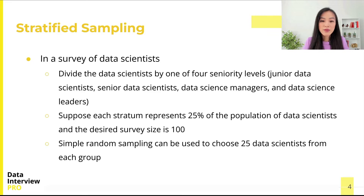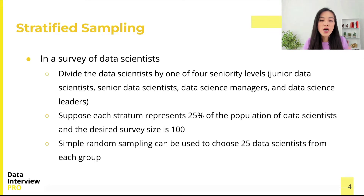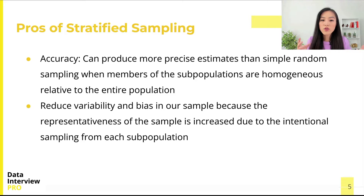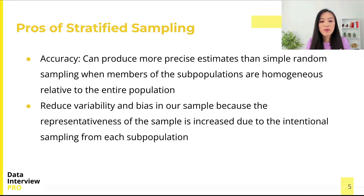Then we use simple random sampling to choose 25 data scientists from each group. The goal of stratified sampling is to ensure that all members are represented in the sample. There are a few advantages of using this sampling method. One is its accuracy — stratified sampling can produce more precise estimates than simple random sampling when members of the strata are homogeneous relative to the entire population.